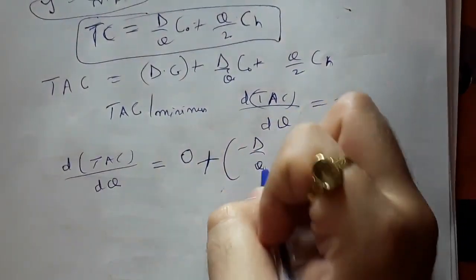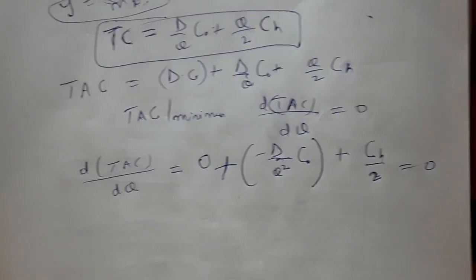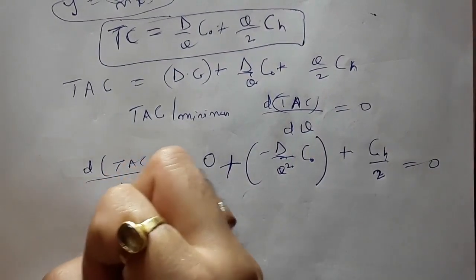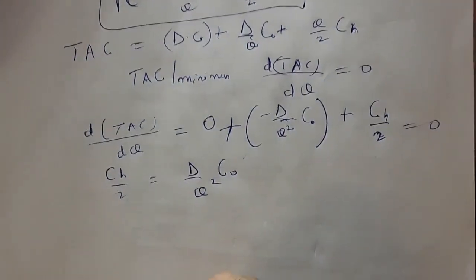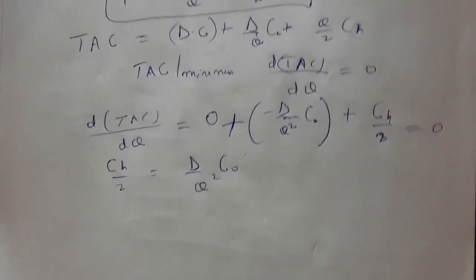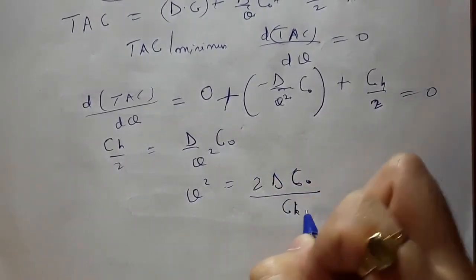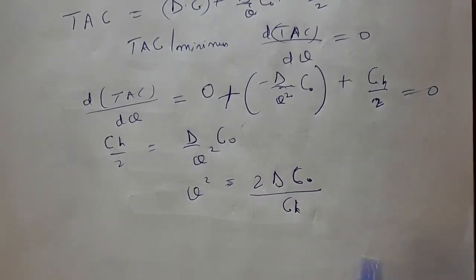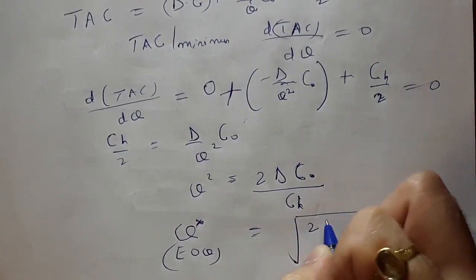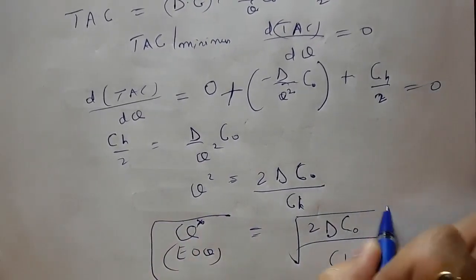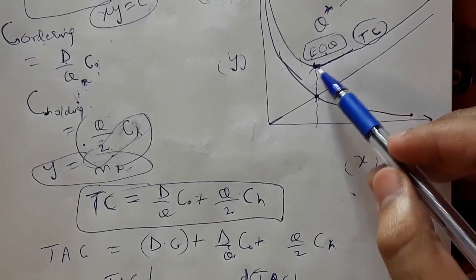Differentiating: d(TAC)/dQ = −D·C₀/Q² + CH/2 = 0. Therefore CH/2 = D·C₀/Q². Rearranging: Q² = 2D·C₀/CH. Taking the square root, the Economic Order Quantity Q* = √(2D·C₀/CH). This is the expression for EOQ.